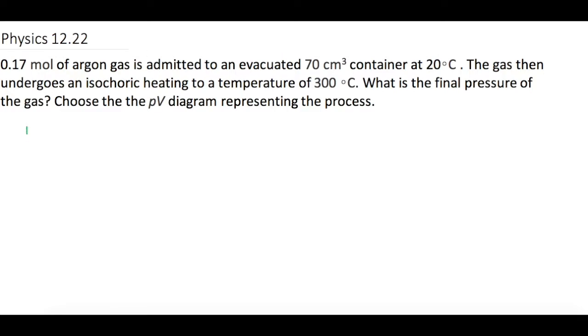Let's write down what we know. N is our number of moles. We have 0.17 moles of argon. They tell us that the volume is going to be 70 cubic centimeters. They tell us the initial temperature is 20 degrees Celsius and the temperature final is 300 degrees Celsius.